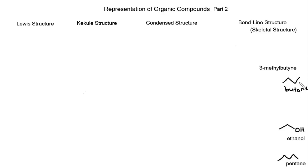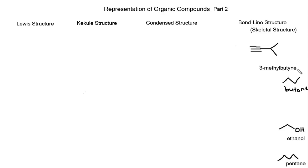With 3-methylbutyne, we have an alkyne or a triple bond at carbon number one. So starting out drawing this structure, carbon number one has a triple bond to carbon number two. Then carbon number three has a methyl group on it. So we've got one, two, three, four carbons in our chain — that's the butyne backbone — with the methyl group on carbon number three. So now we've drawn the bond line structure for 3-methylbutyne.